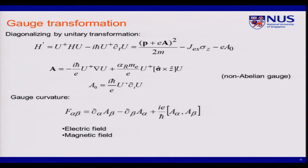We got a vector potential A, and some sort of scalar potential A-naught. And we can calculate the gauge curvature from the gauge fields. So the physical quantities here is the electric field and the magnetic field. In this case, I just focus on the electric field.